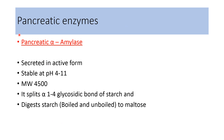Regarding pancreatic alpha-amylase: it is secreted in an active form and is stable at pH 4 to 11. Its molecular weight is 4500 daltons. Its function is to split the alpha-1,4 glycosidic bond of starch, digesting starch to form the disaccharide maltose.